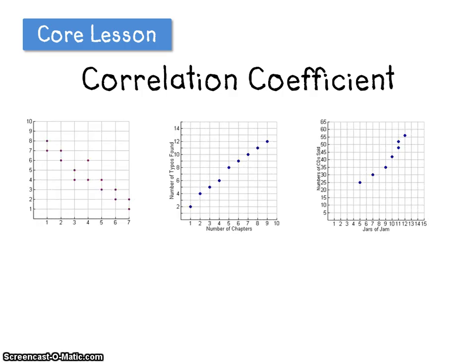So let's take a second look at these three graphs. We said that the second graph was the strongest correlation. Well, when calculated, the correlation coefficient is actually 0.99. That value is very close to 1, 1 being a perfectly straight line. We can see that these points aren't perfectly straight, but they're pretty close.